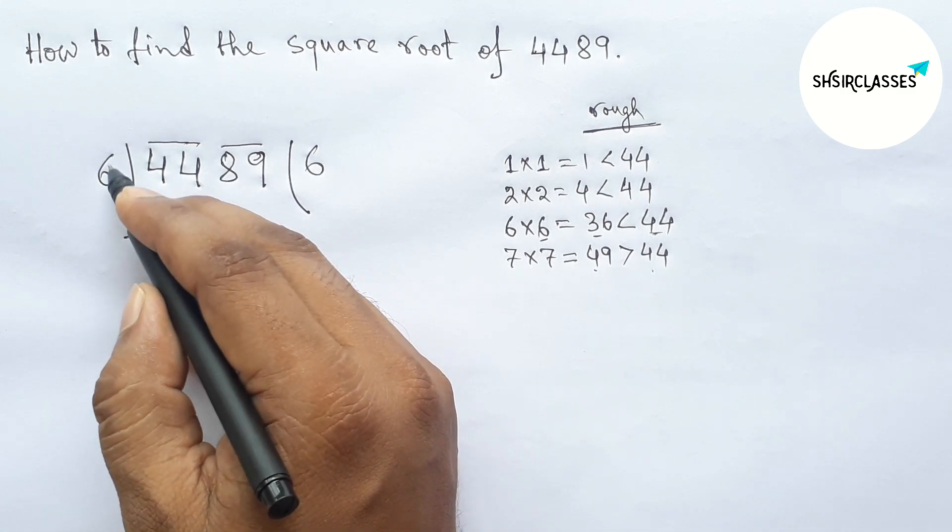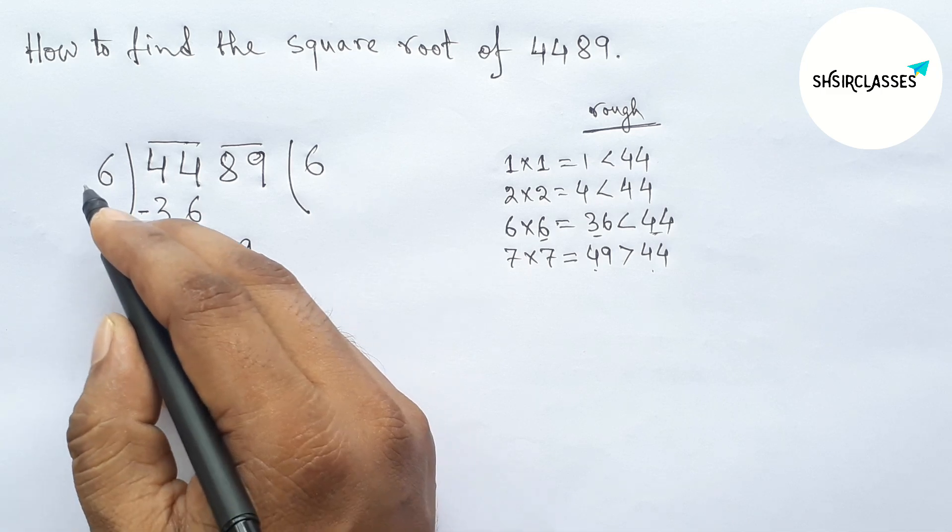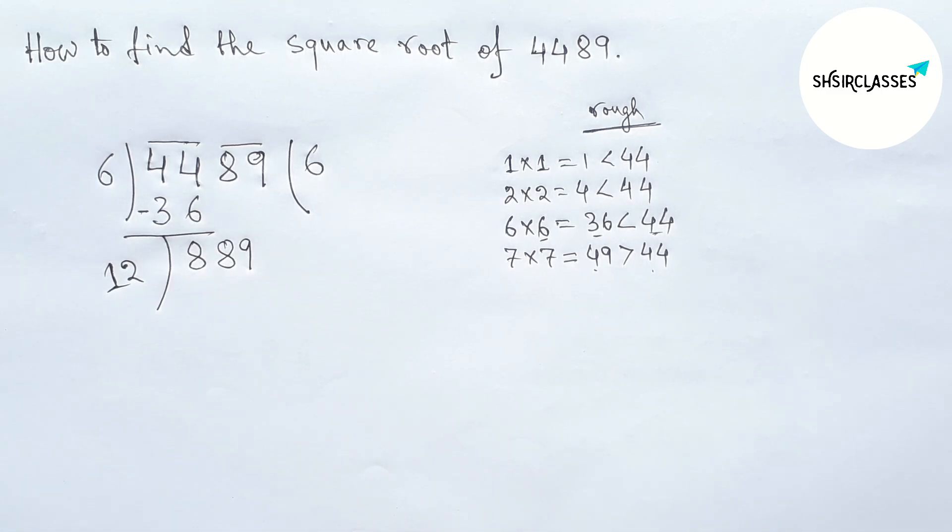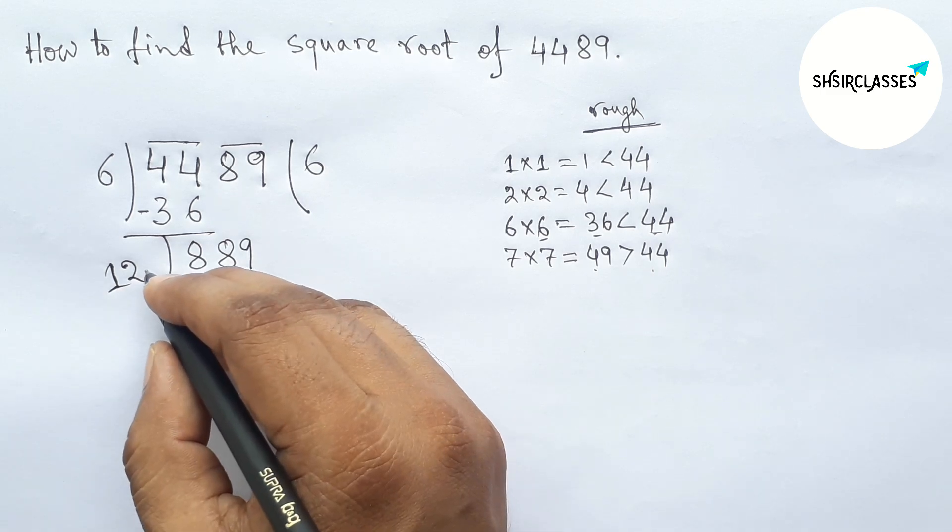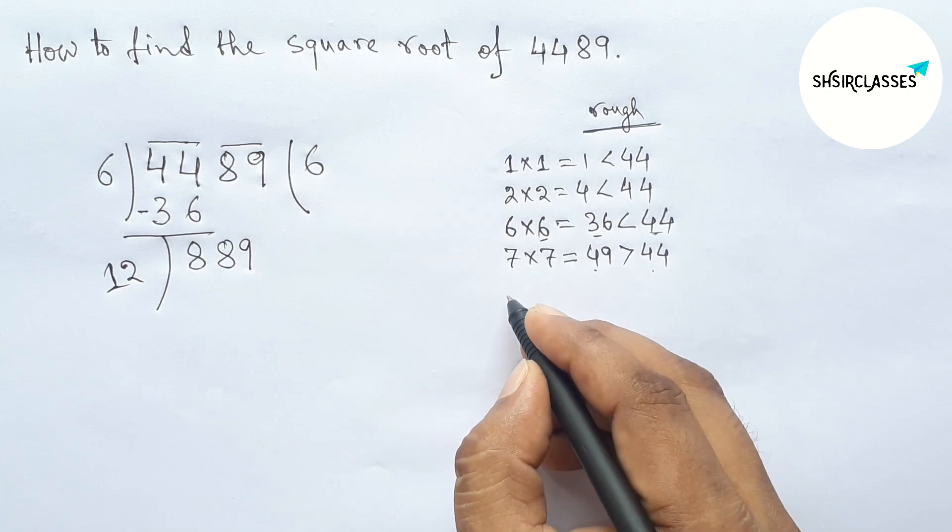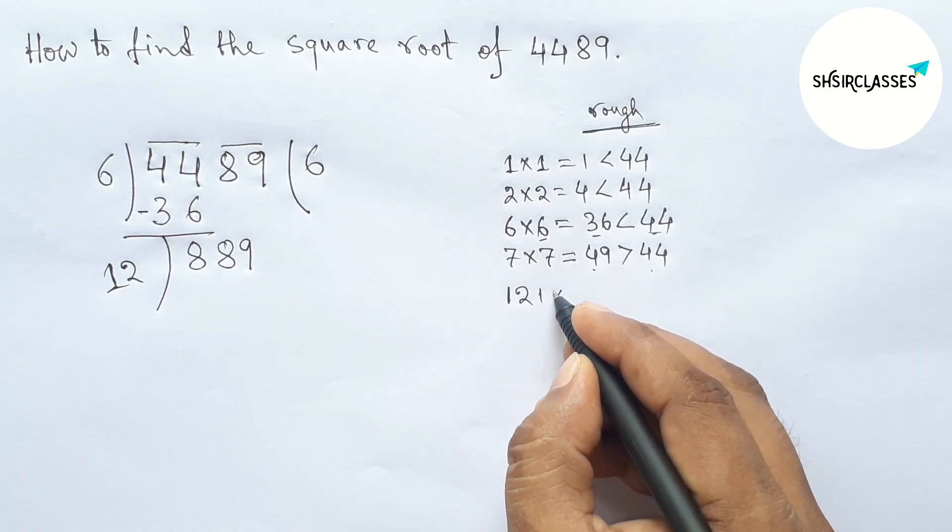Next, taking the double of 6, so double of 6 equal here 12. Now we have to choose a number beside 12 and multiplying by that number which is less than or equal to 889. So first taking here 1 and multiplying by 1, so which is less than 889.